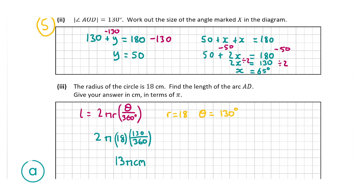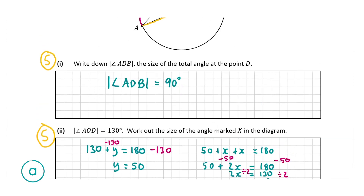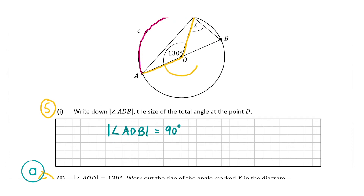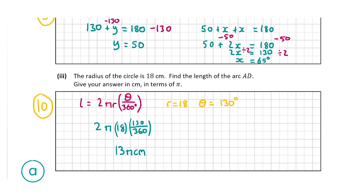That was the minor arc — the smaller arc marked in pink. For the major arc you would use a similar method but the angle would be 230 degrees, since 360 minus 130 equals 230 degrees. Putting in 230 instead of 130 gives 23π centimetres for the major arc. Full marks were awarded for finding either arc. That's A part 3, worth 10 marks.